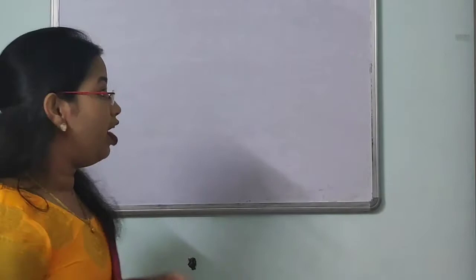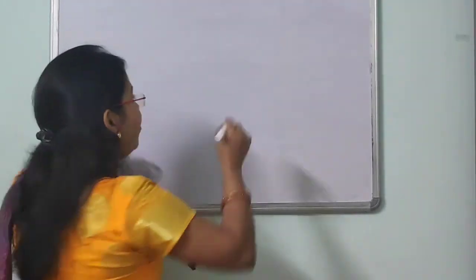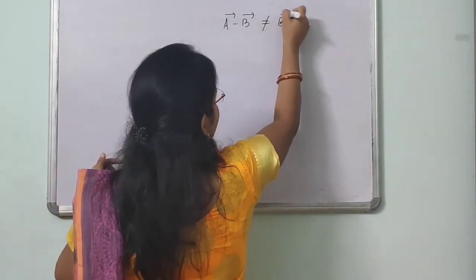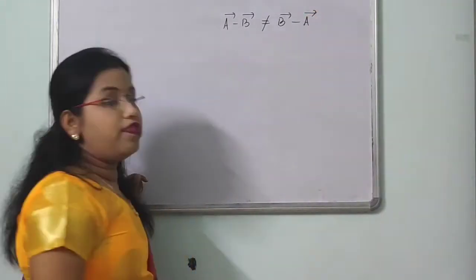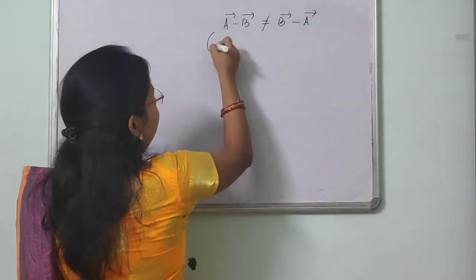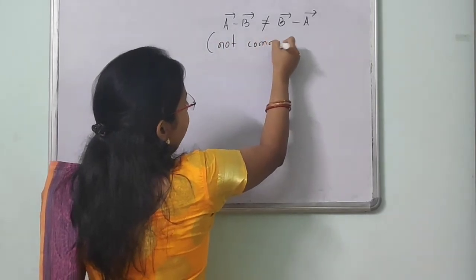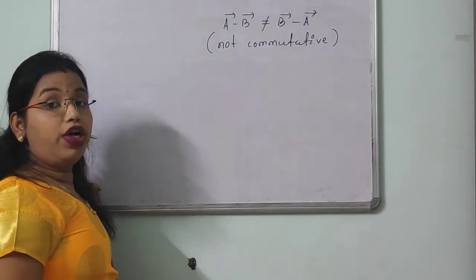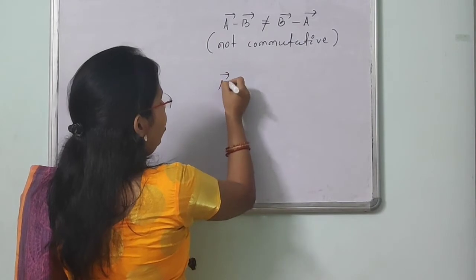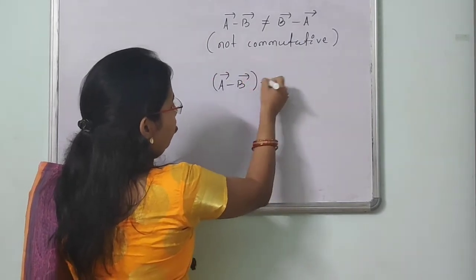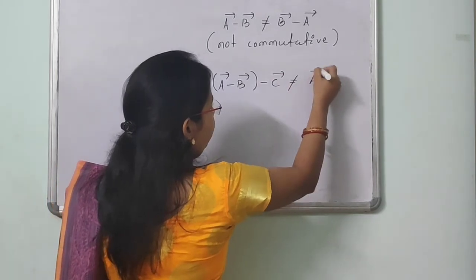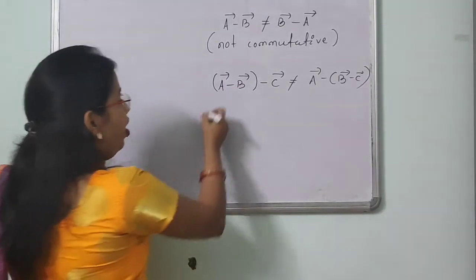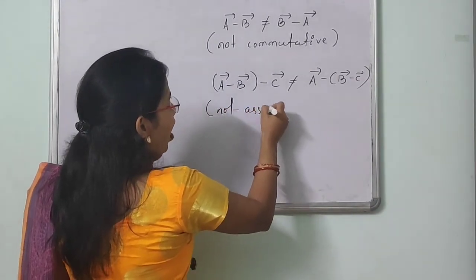Regarding vector subtraction, we must also note that vector subtraction is not commutative — that is, A vector minus B vector is not equal to B vector minus A vector. Similarly, vector subtraction is not associative — A vector minus (B vector minus C vector) is not equal to (A vector minus B vector) minus C vector.